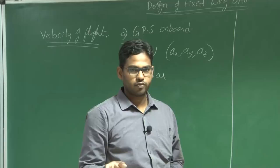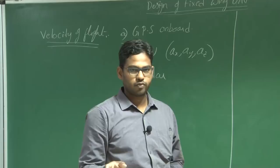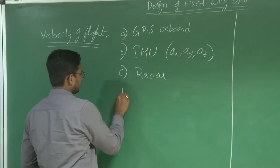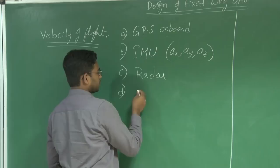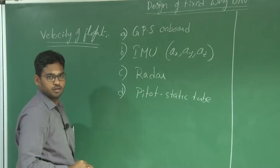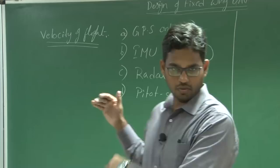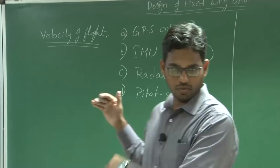We also have a sensor called a pitot-static tube. We are not going to argue about how accurate these measurements are, but these are the various sources from which we can measure the velocity. Now in this lecture, let us discuss how to use this pitot-static tube to measure the velocity.